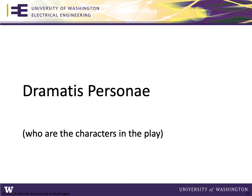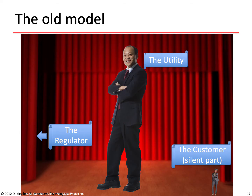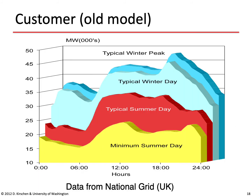Let us now introduce the various actors in this new electricity supply industry model. In the old model, there was really only one main actor — the utility. The regulator was essentially on the side of the stage with a very small role, and the customer really only had a silent part in the whole play. The utility didn't have to care very much about individual consumers — it could bundle all consumers together and represent them by their aggregated load profile.